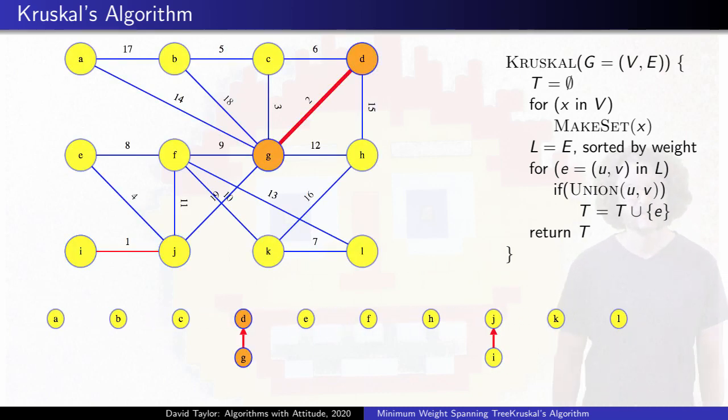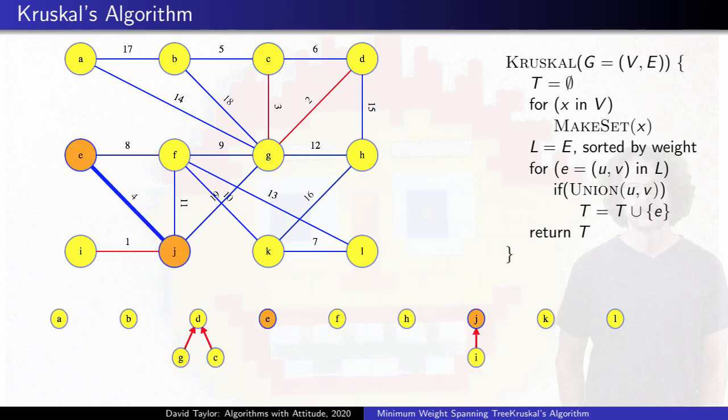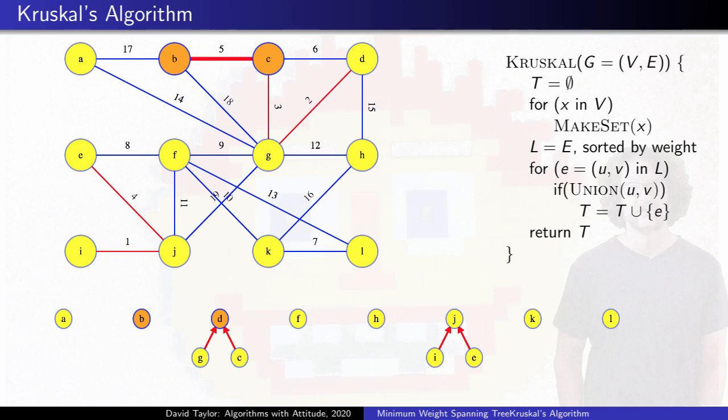So that's the algorithm, and I'll start the animation again from the beginning, but I'll add the underlying disjoint set structure that is used to determine which vertices are in the same tree.